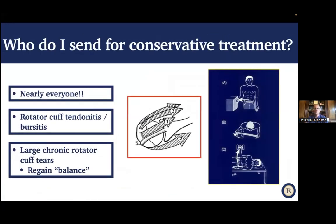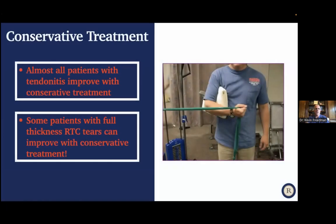Who gets conservative treatment? Nearly everyone. Anyone with rotator cuff tendinitis or bursitis gets physical therapy, possible injection, and anti-inflammatories. Anyone with a large or chronic tear goes to therapy to regain shoulder balance — we don't rush to surgery. Almost everybody with tendinitis gets better with conservative treatment. Importantly, there are patients with full thickness rotator cuff tears that improve with conservative treatment and never go on to surgery. Just because you have a tear doesn't mean you need an operation.